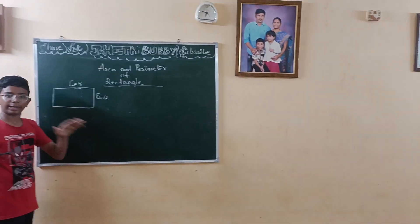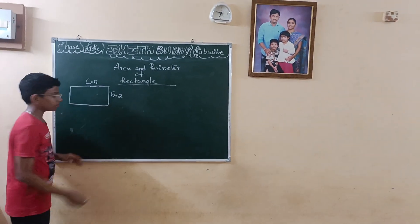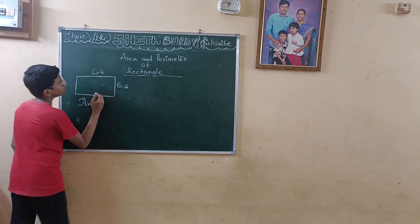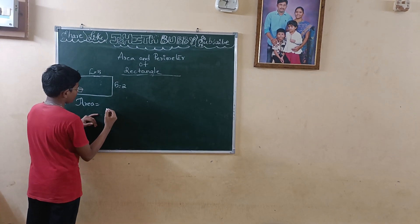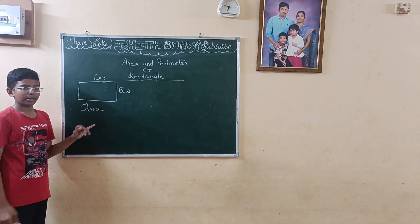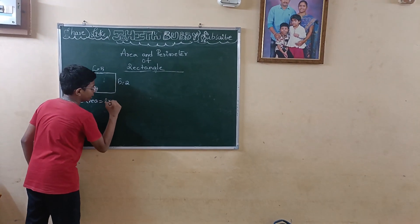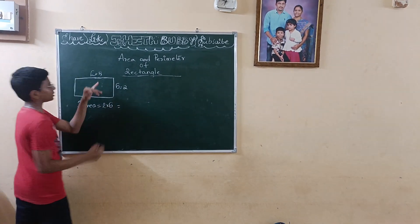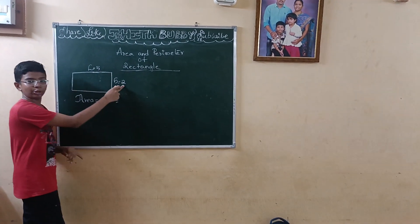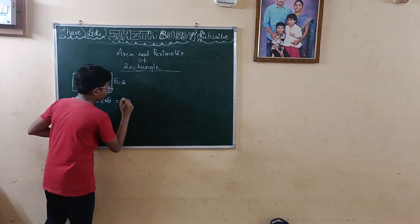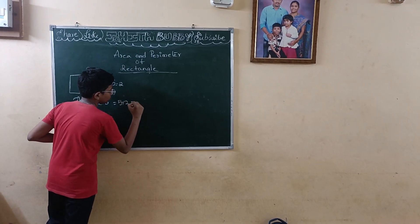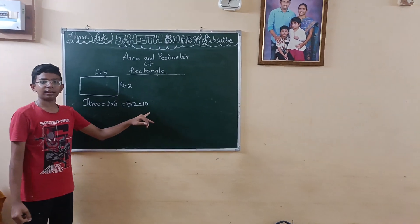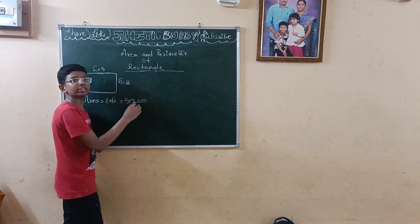Now let me find the area. Area equals — what is the formula of area? L into breadth. L into breadth equals: what is L? 5. What is breadth? 2. So 5 into 2 equals 10. Area of this rectangle is 10 centimeters squared.